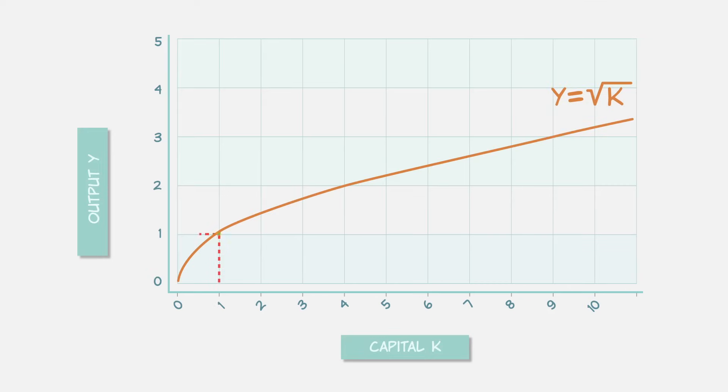To represent both of these properties, we can use a simple production function, one which we're already familiar with, the square root function. Output equals the square root of the capital inputs. So if we input one unit of capital, output is one. If we input four units of capital, output is two. If we input nine units of capital, output is three.